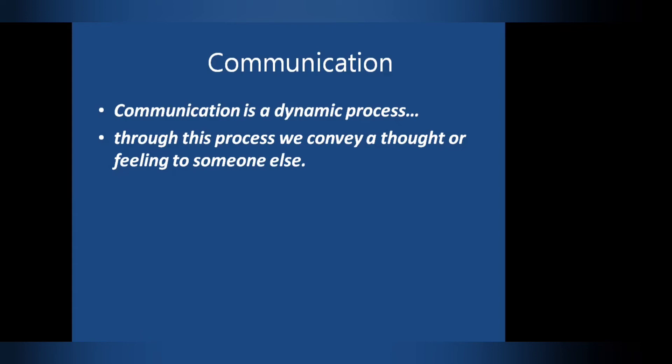Number two: through this process, we convey a thought or feeling to someone else. You must understand that when you are conveying your thoughts, it takes a process. When I said 'precious,' I was talking about a specific person, but our sister had her own thoughts. So if I was deliberate about my communication, I should have been precise — I should have mentioned 'precious' in this class. So while I was communicating, I was not conveying my thoughts accurately.